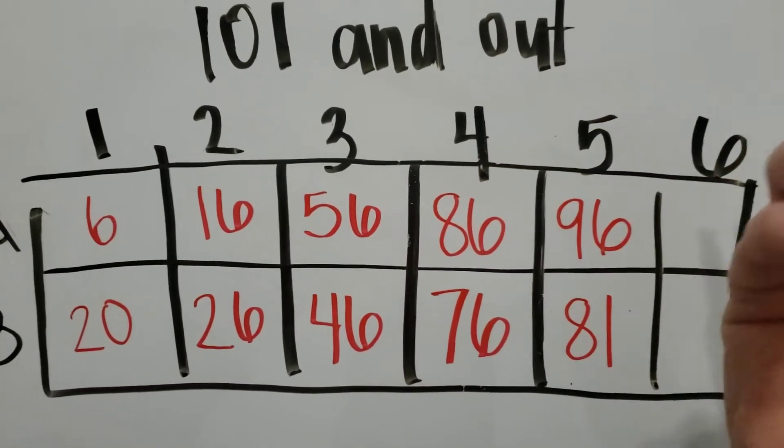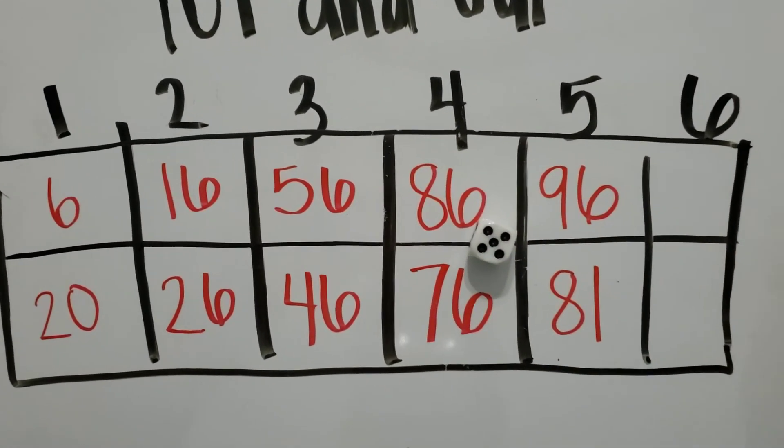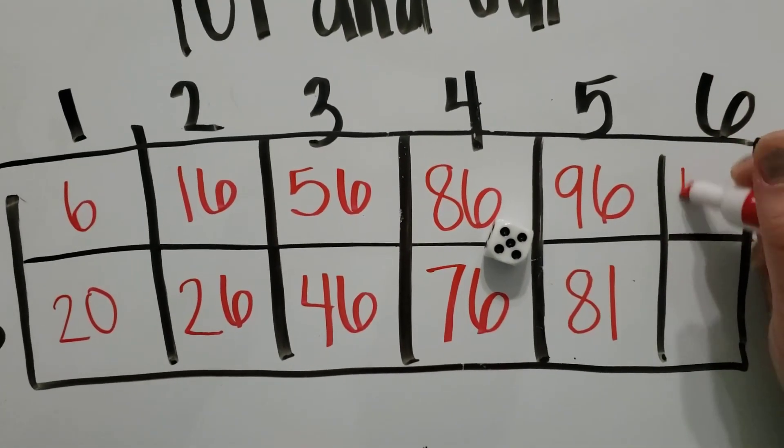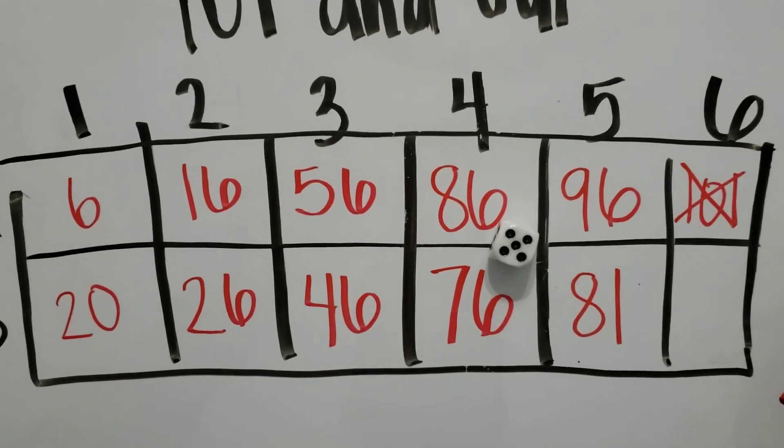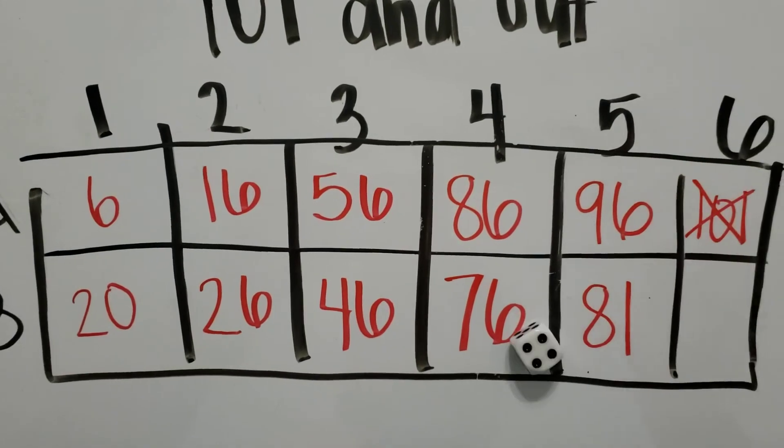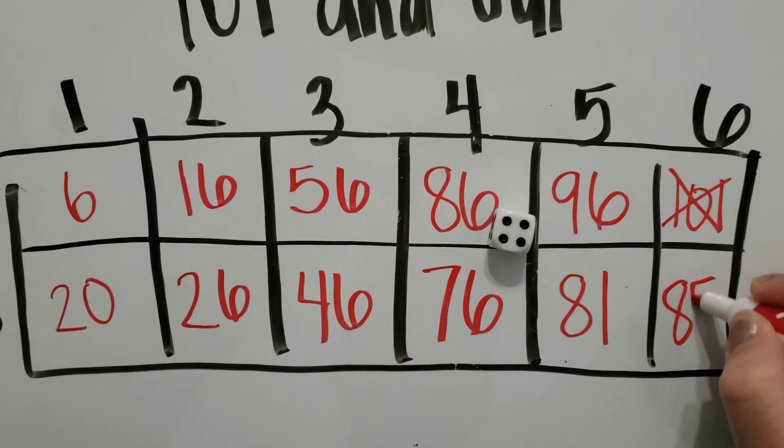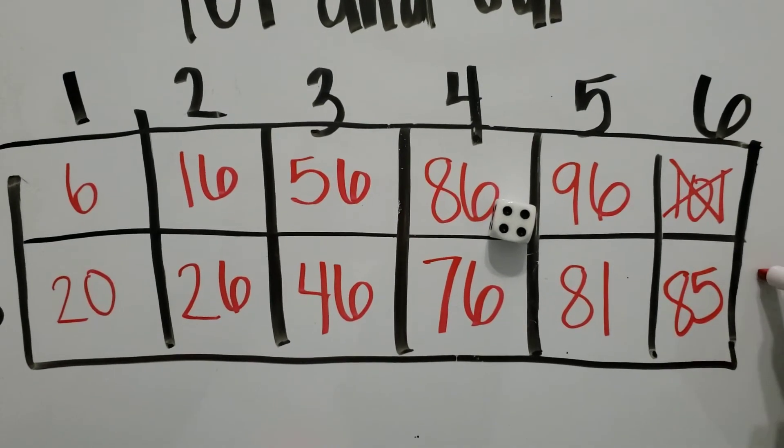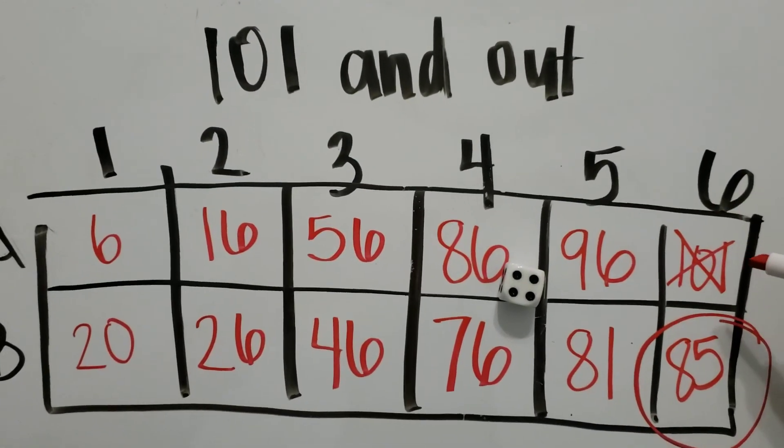And then team A is going to roll the dice. And I really hope I don't go over 100. Oh no, I rolled a five. So that means that I am 101 and I just lost because I went over 100. We'll go ahead and roll for team B just to see what number they got. And they got four. So it would be 85. This team right here would be the winner because they got the closest to 100 without going over.